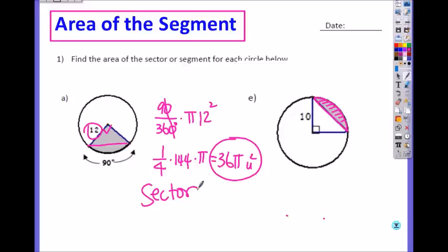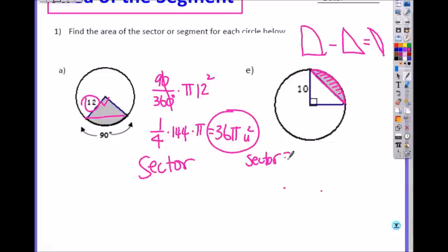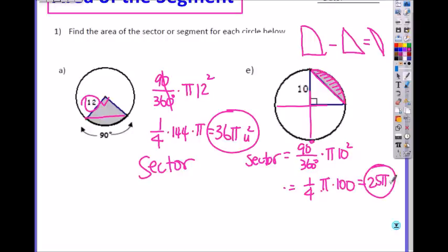Now how do you find the area of a segment? Area of the segment is the same thing except you're excluding this triangle part, so it is the sector minus the triangle to get the area of a segment. So first find the area of the segment, which is 90 divided by 360, or 1/4 of the circle, times pi r squared, which is 10 squared. So it is 1/4 pi times 100, so 100 divided by 4 is 25 pi unit squared. What is the area of a triangle?